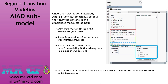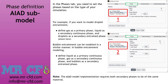The multi-fluid VOF model provides a framework to couple the VOF and Eulerian multiphase models by enabling schemes such as geo-reconstruct, CICSAM, and compressive. This allows discretization suited to both sharp and dispersed interface regimes while overcoming limitations of the VOF model arising from the shared velocity and temperature formulation. When using the AIAD option, you need to define phases carefully: for droplet entrainment, define gas as primary phase, liquid as secondary continuous phase, and droplets as secondary entrained phase.